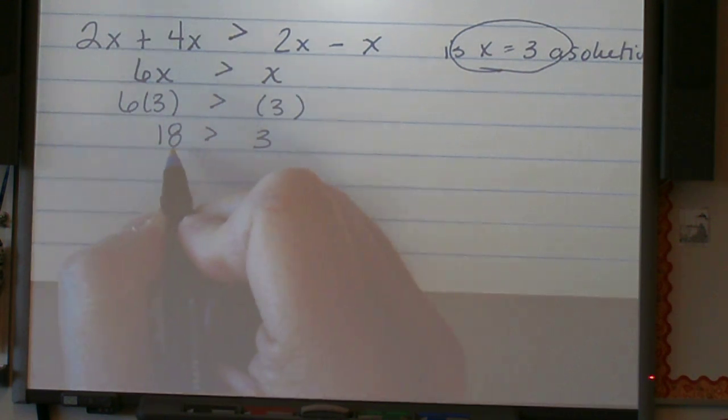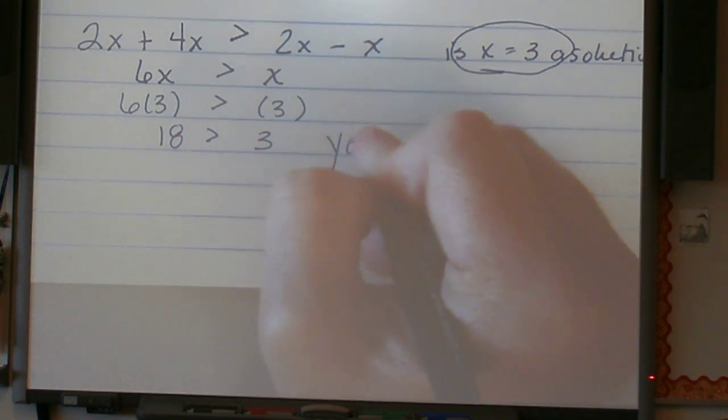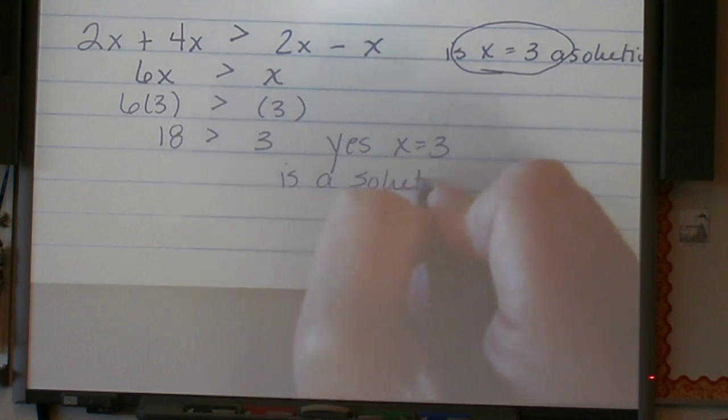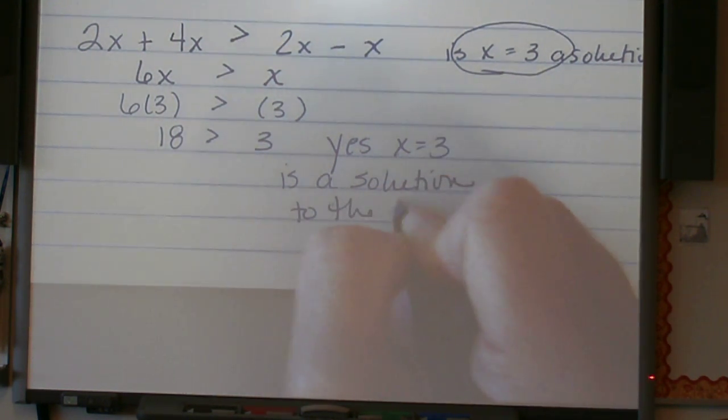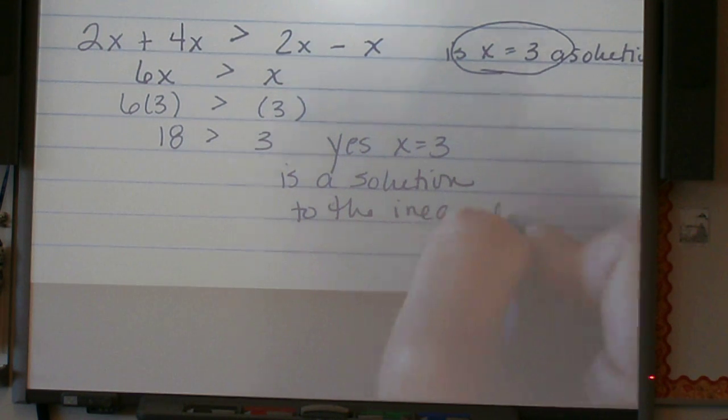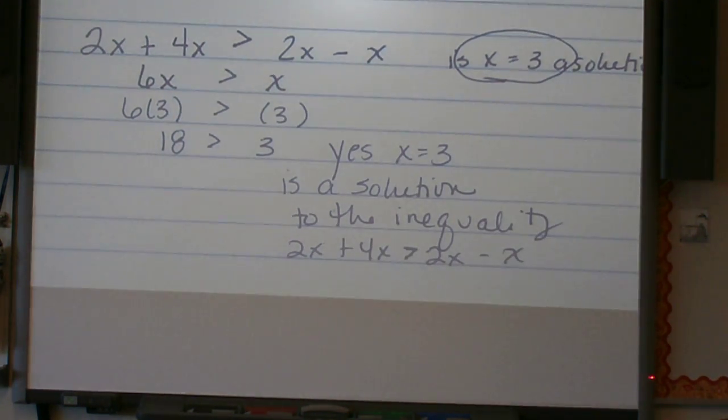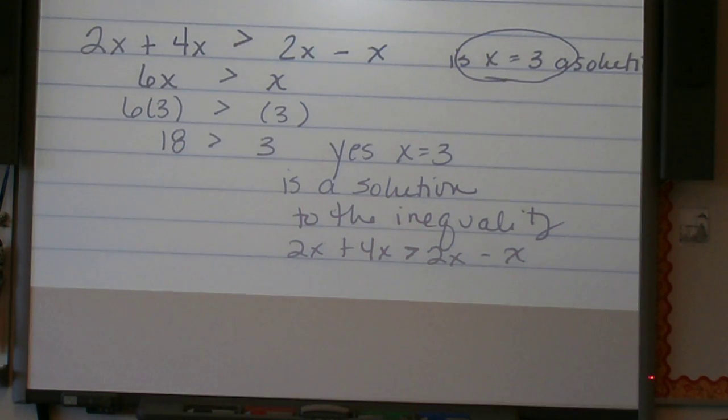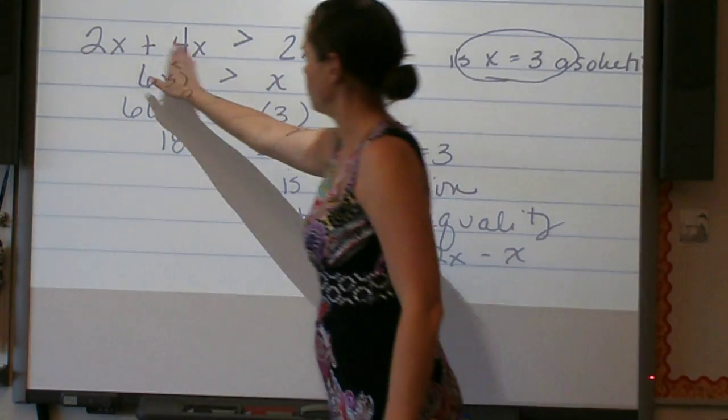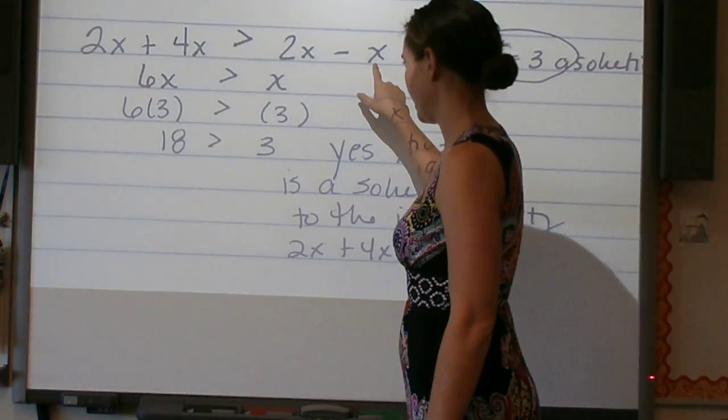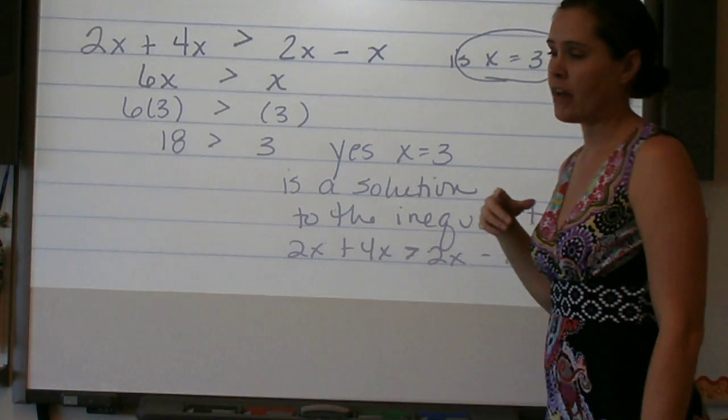And then ask yourself, is 18 greater than 3? Yes, it is. So yes, x equals 3 is a solution to the inequality 2x plus 4x greater than 2x minus x. So again, when we're evaluating the expressions, remember, we have an expression here, 2x plus 4x. An expression here, 2x minus x. Same way when we were evaluating a few weeks ago. We're given the value for the variable, and we simply plug that value in.